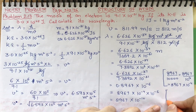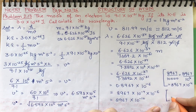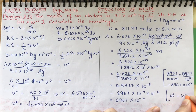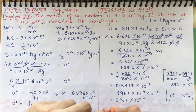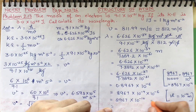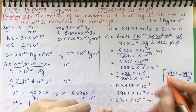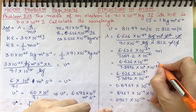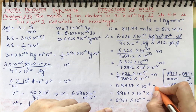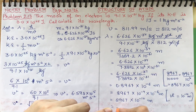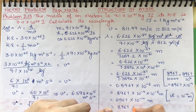Since 1 angstrom = 10⁻¹⁰ meter, we can convert this result. The wavelength comes out to be 8.967 angstroms.